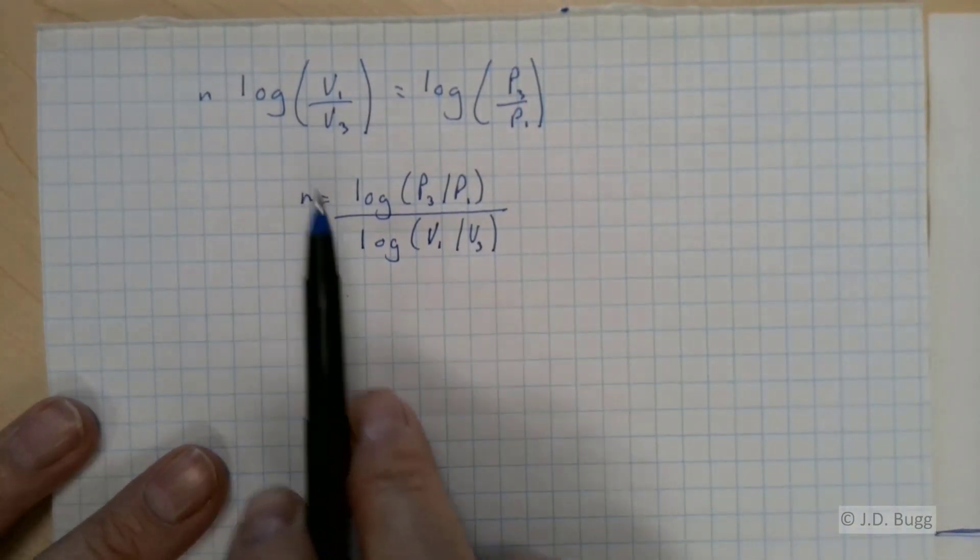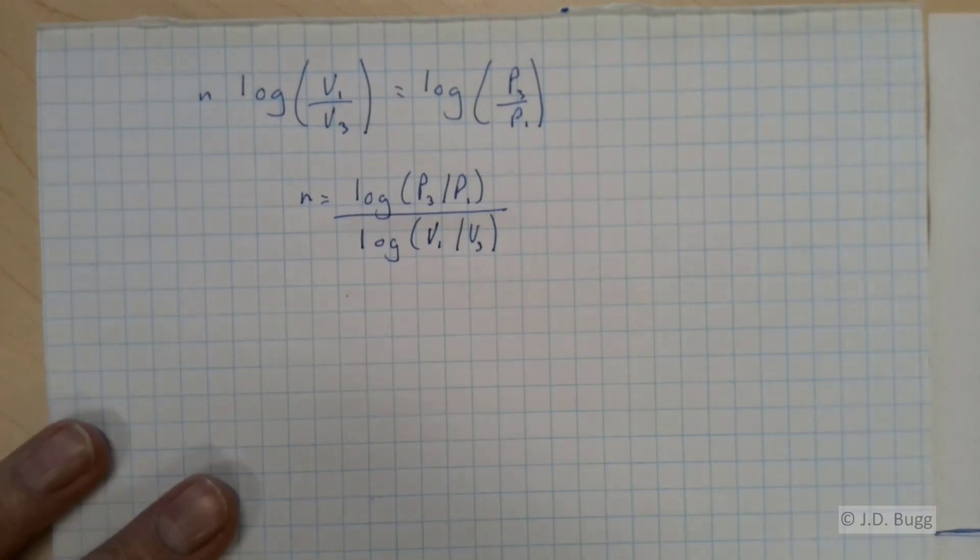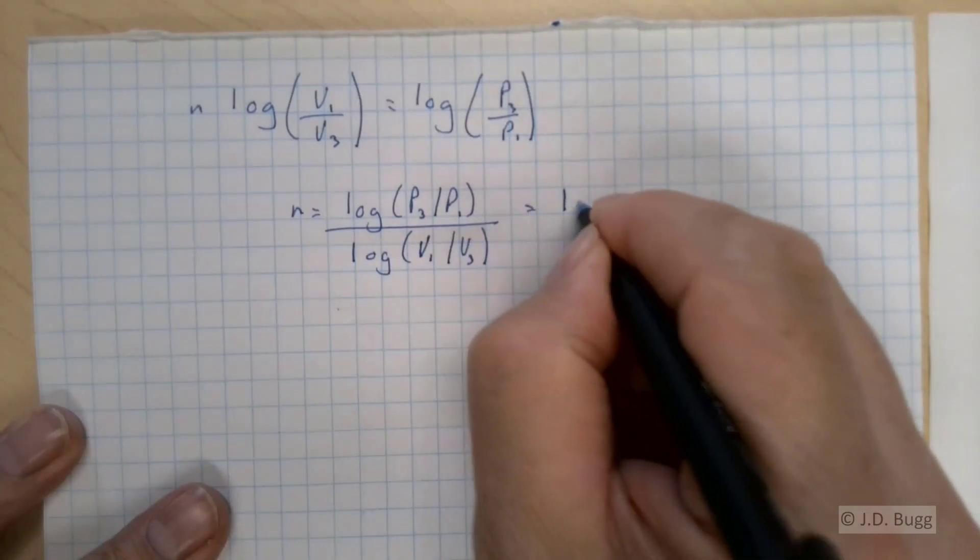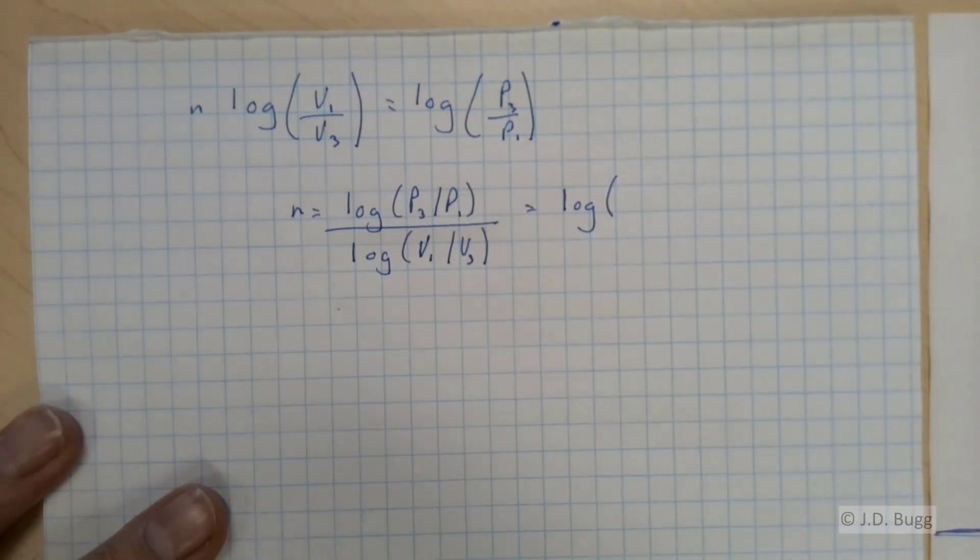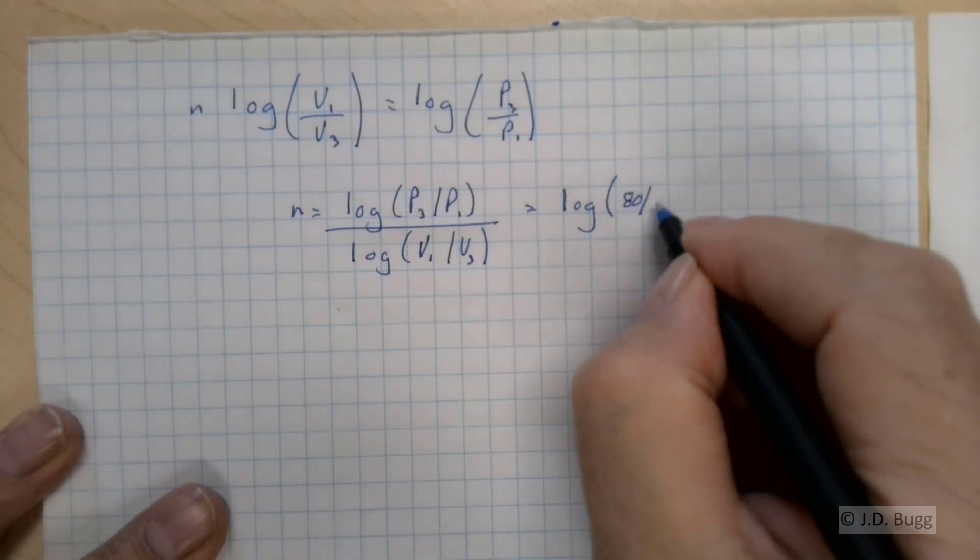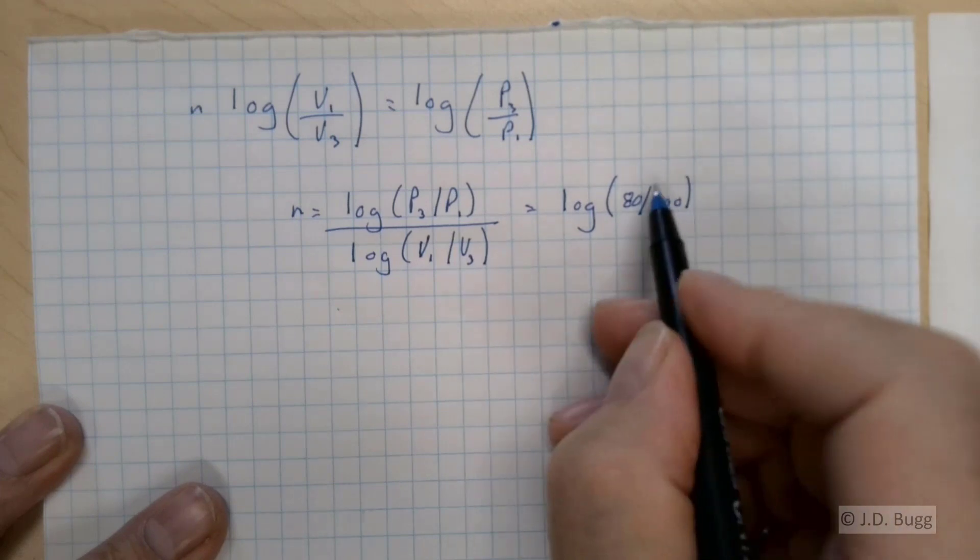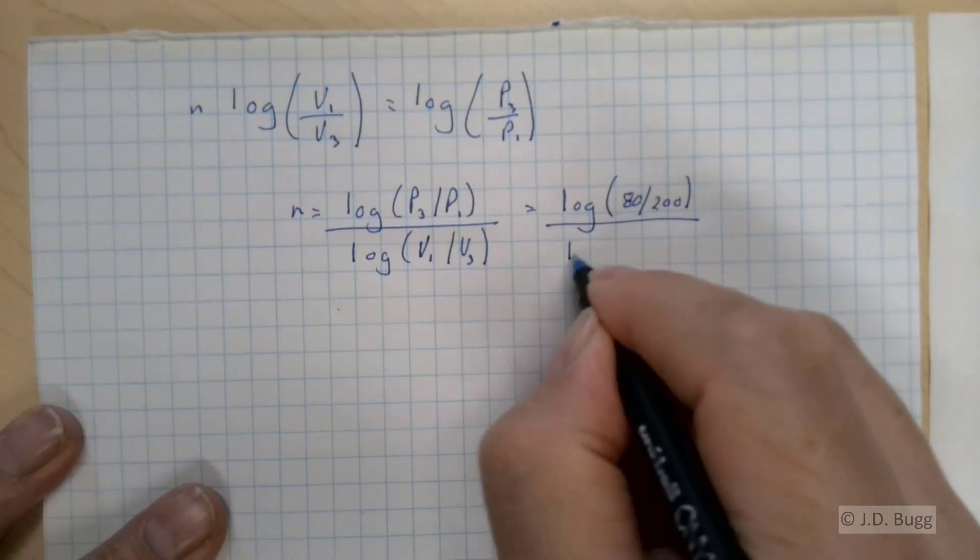So N will equal the log of P3 over P1 divided by the log of V1 over V3. And notice, it doesn't actually matter whether you use common or natural logs here, as long as you use the same in both cases. So this pressure ratio, we just need to make sure we have the same units on those pressures. So this is 80 bar over 200 bar.